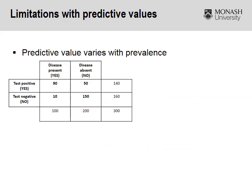On the surface, predictive values seem pretty good. However, the one limitation — and it's quite a major limitation — is that the predictive value will vary with prevalence. While sensitivity and specificity don't change because they only relate to test characteristics, predictive values will change depending on where these values have been formulated, in terms of countries and locations, because they're dependent on the prevalence of a particular condition.